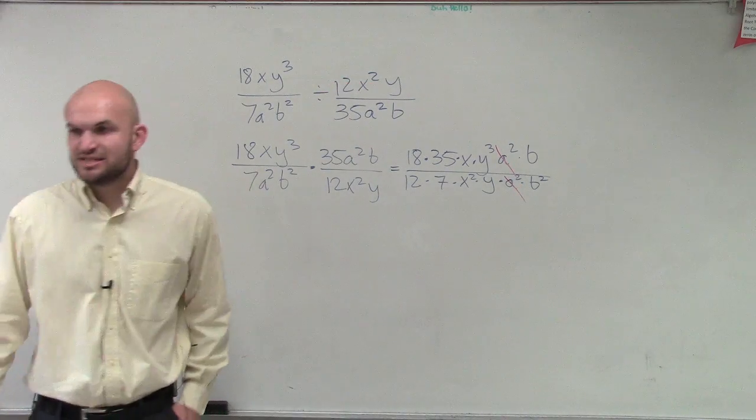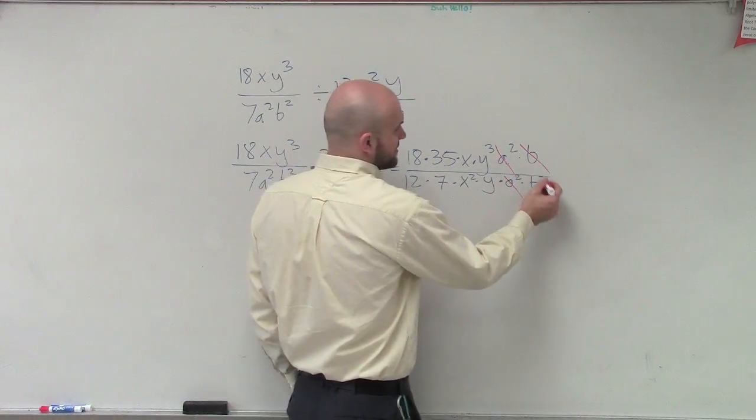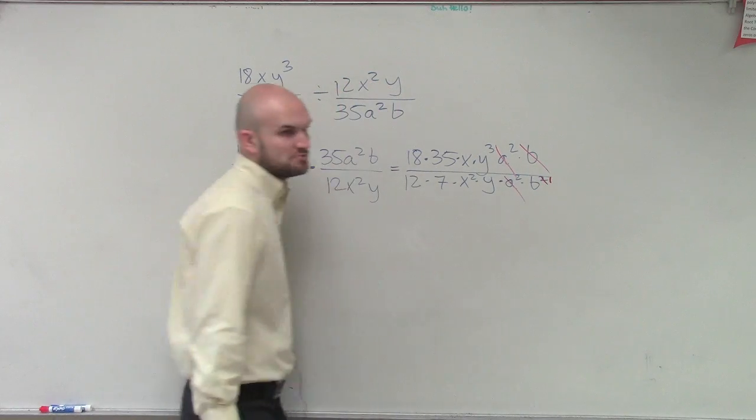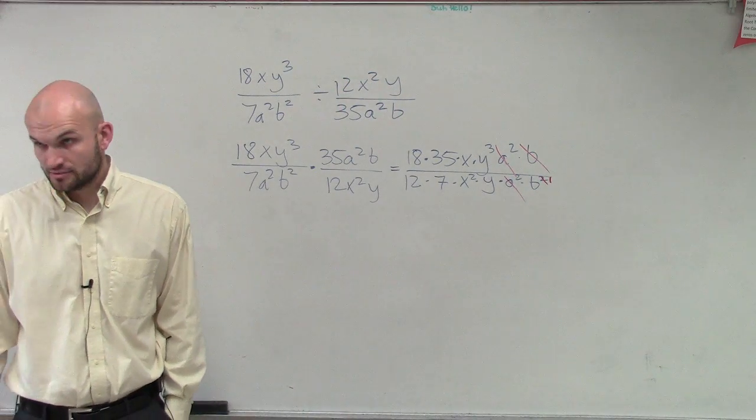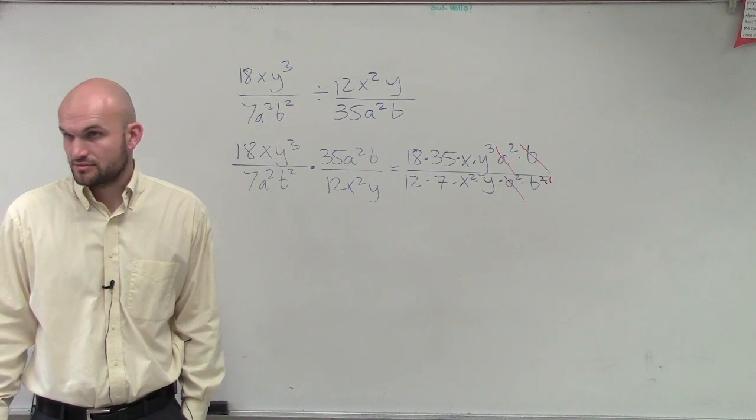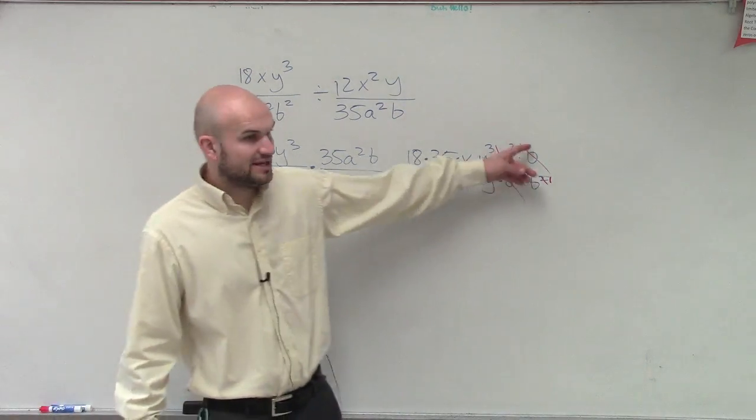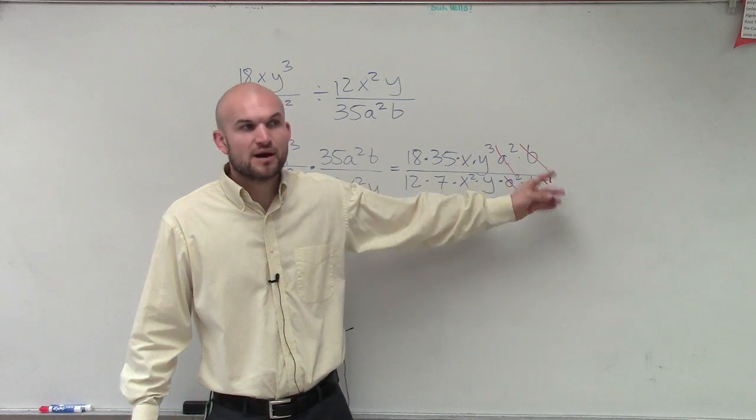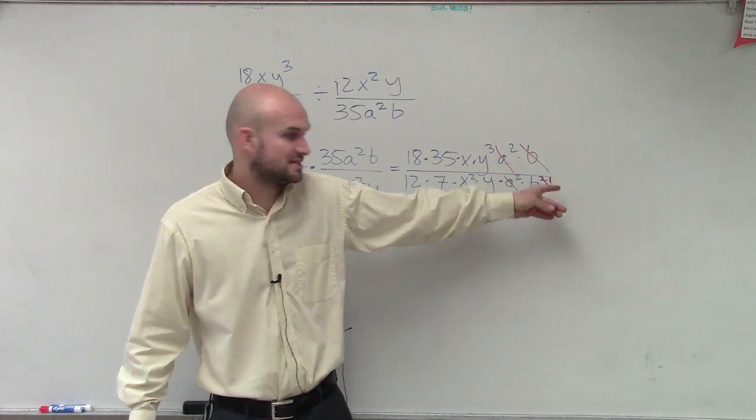b divided by b squared, well, that's just going to leave us with b to the first power in the denominator, right? Remember the division properties of exponents? Yes? b divided by b squared is going to be b to the negative first power, which means you'll have b to the first in the denominator.